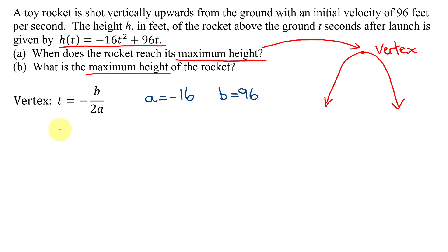Plugging those into this equation, I get t equals negative 96 divided by 2 times a, which is negative 16. So I get negative 96 divided by 2 times negative 16 is negative 32. Negative 96 divided by negative 32 is 3. So when does the rocket reach its maximum height? At 3. And what are the units? Seconds. So at 3 seconds, the rocket reaches its maximum height. So that is the answer to part A of this problem.